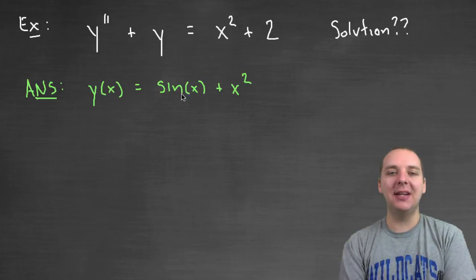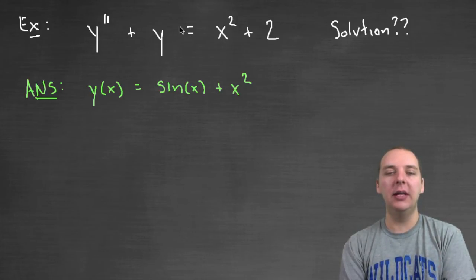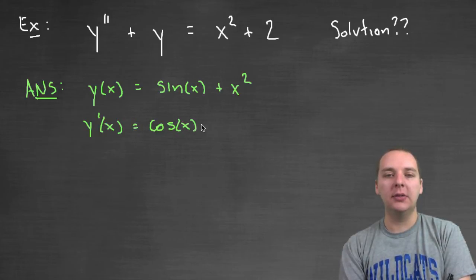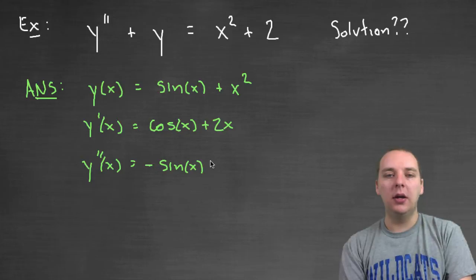And so I did that for this example, and here's what I got. I got that y should be sin(x) + x². Totally not clear from the beginning, but nevertheless I think this would be true. If this is y, then y' would be equal to cos(x) + 2x, and y'' would be equal to negative sin(x) + 2.